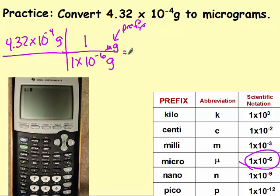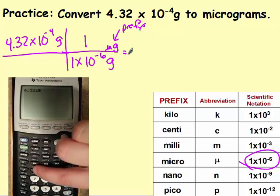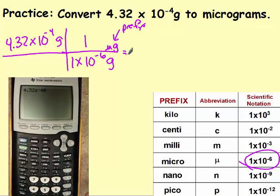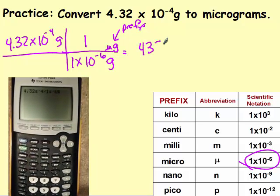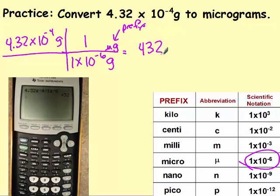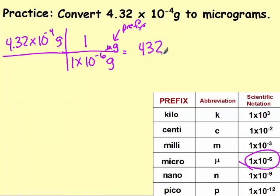I multiply the top, divide the bottom. So 4.32 times 10 to the negative 4th, divided by 1 times 10 to the negative 6th, gives you 432. Now, I have 3 significant figures, I end with 3, so I'm good.